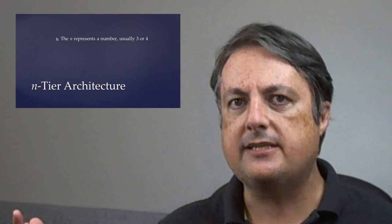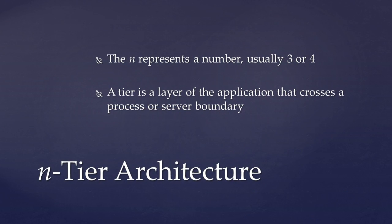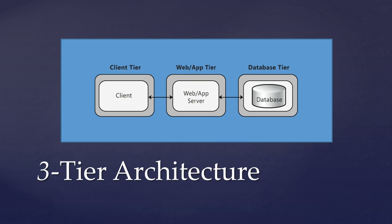Now, what's a tier? A tier in software architecture is a boundary between a layer of the application. You've got the presentation layer, you can have a business layer, and you can have the data layer — and those are three layers of a three-tier application.